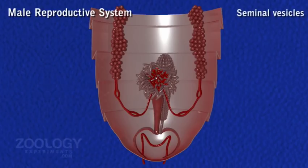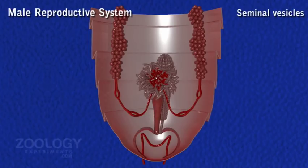Seminal Vesicle. Present on the ventral surface of the anterior part of the ejaculatory duct are two groups of numerous small glistening white sacs constituting the seminal vesicles, meant for storage of sperm. Seminal vesicles can be distinguished from Eurycolia breves of the mushroom gland by their slightly larger size and more opaque whiteness.